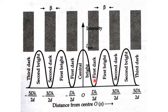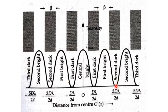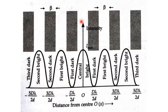At the first dark fringe, the intensity is 0. Then at D·λ/d we obtain the first bright fringe with intensity Imax again. At 3D·λ/(2d) we get the next dark fringe with intensity 0, and so on — bright fringe, dark fringe, bright fringe, dark fringe. The width of the bright and dark fringes is known as the fringe width, denoted β, and they are of equal length.